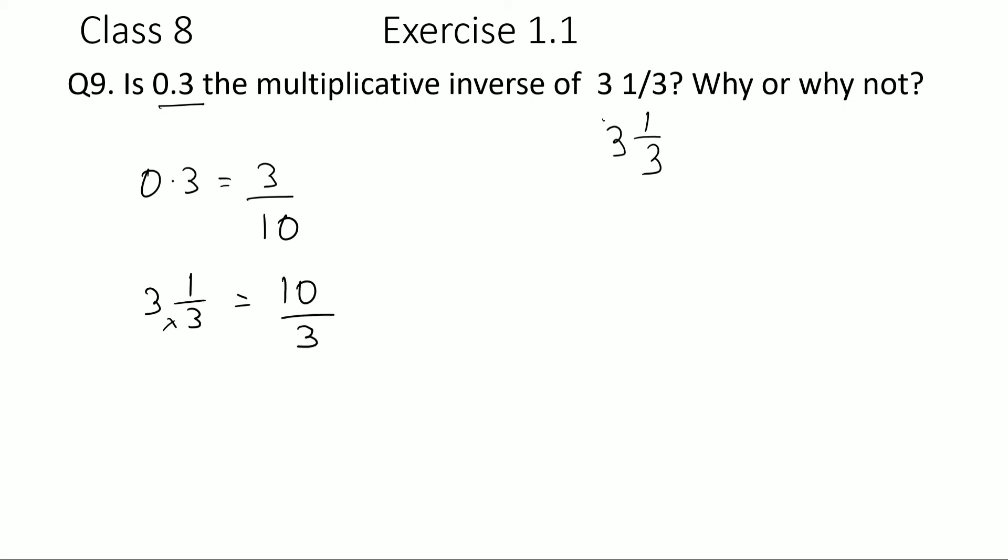Okay so yes, 3/10 and 10/3 are multiplicative inverse of each other. And when we multiply these two, let's see if we get 1. 10 and 10 gets cancelled out, 3 and 3 gets cancelled out, so we get 1.